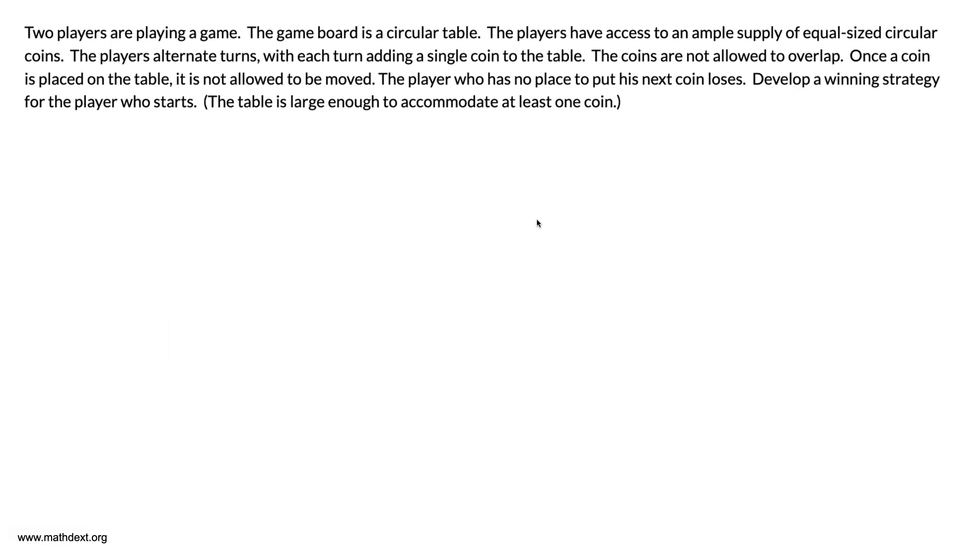Two players are playing a game where the players have a large supply of equally sized circular coins and the players take turns adding coins to the table and the coins are not allowed to overlap. Once a coin is placed on the table, it is not allowed to be moved. The player who has no place to put his next coin loses. Develop a winning strategy for the player who starts.